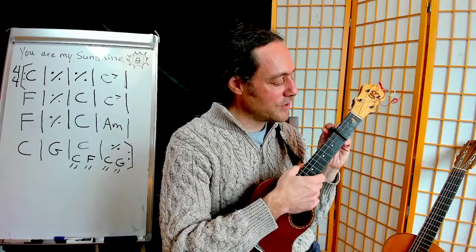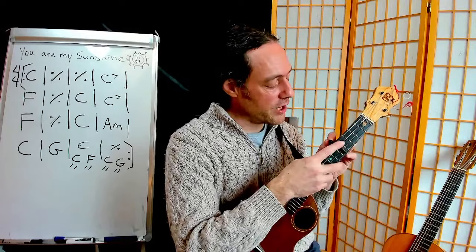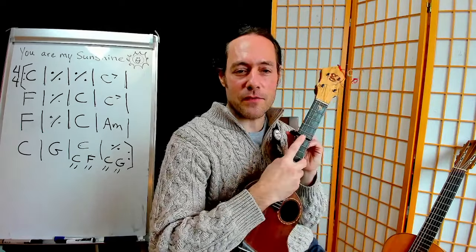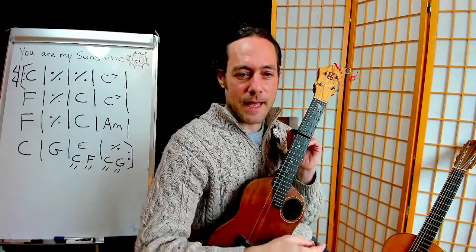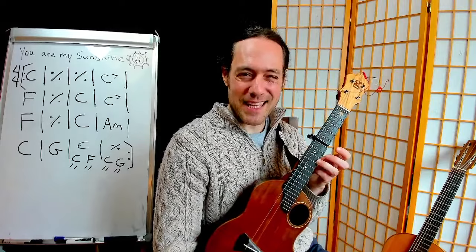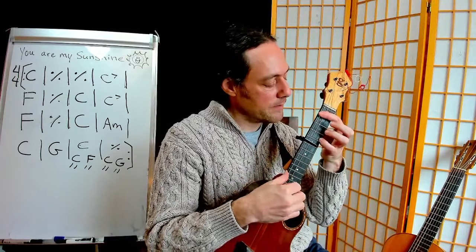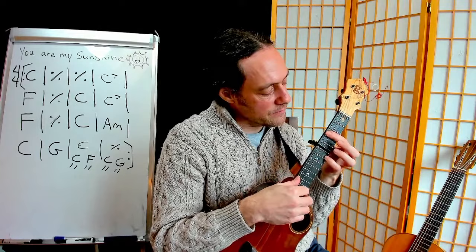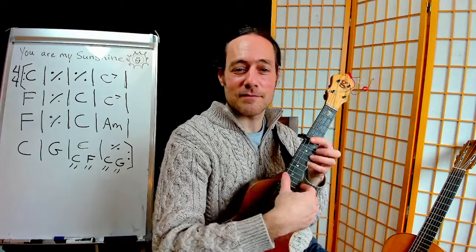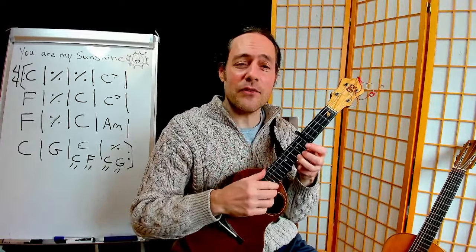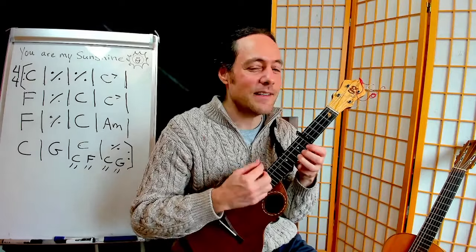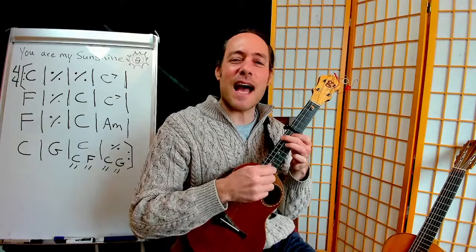It's a really fun thing to do — just take a capo and explore different keys with the same shapes. I've moved mine now to the fifth fret. When I play this C chord shape, I'm in the key of F. Just pretend the capo isn't there: this would be C, C sharp, D, E flat, E — and at the fifth fret, an F chord. You are my sunshine, my only sunshine. You make me happy when skies are gray.